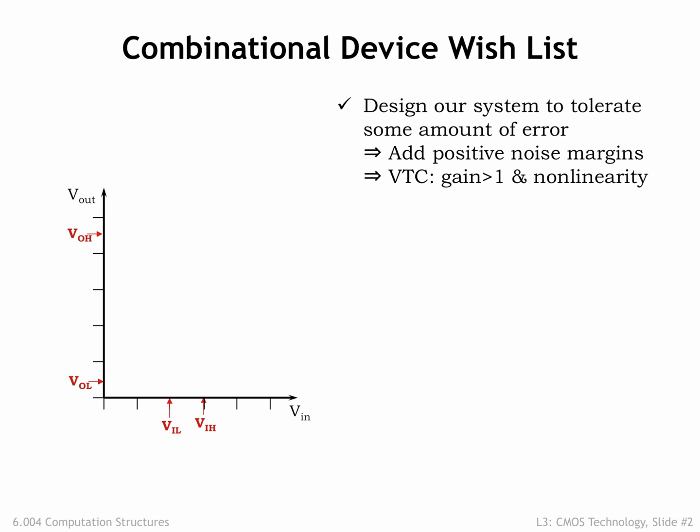We specified that VOL be strictly less than VIL, and termed the difference between these two low thresholds as the low noise margin — the amount of noise that could be added to an output signal and still have the signal interpreted correctly at any connected inputs. For the same reasons, we specified that VIH be strictly less than VOH. We saw the implications of including noise margins when we looked at the voltage transfer characteristic for a combinational device.